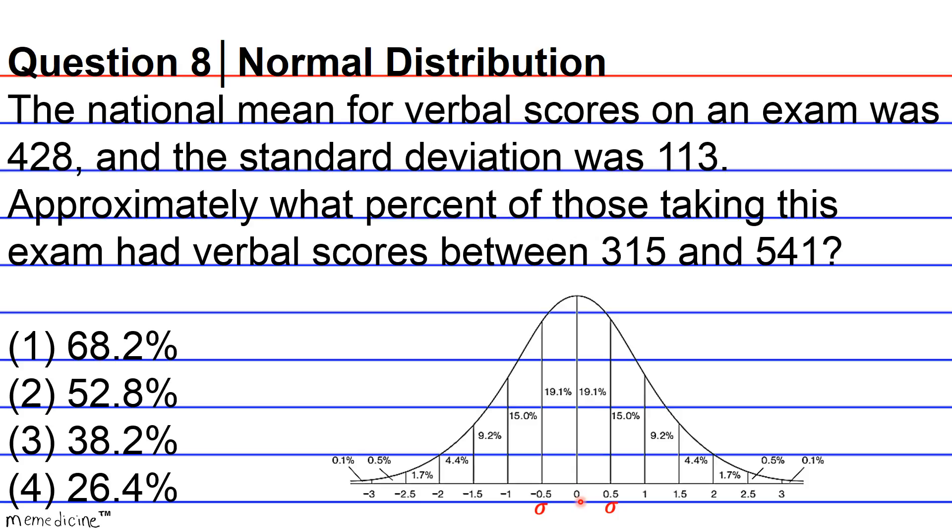So this interval here between the 0.5 sigmas, or standard deviations, contains a total of 2 times 19.1%, or a total of 38% of the test scores lie within 0.5 standard deviation away from the mean in either direction.